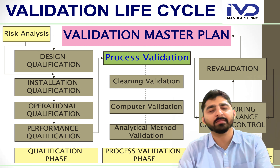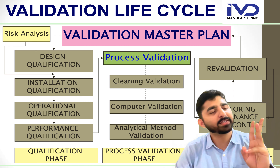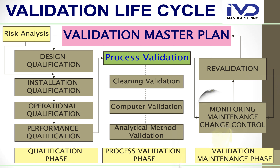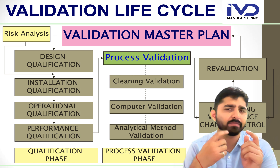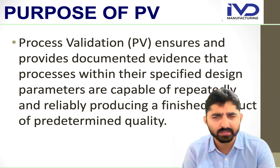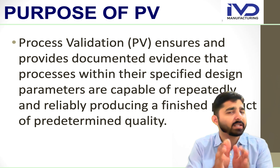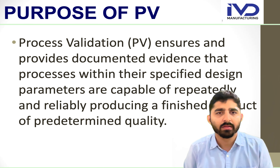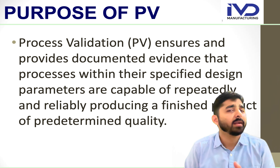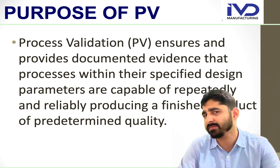We have three process validation batches. Whenever I create these three PV batches, I need to maintain documentation of the processes — a BMR, log sheets, log books — and capture every detail, including manpower requirements, operator details, equipment ID, and everything else. Once I produce all three batches, I perform QC on all three batches individually. At the end, I demonstrate that whatever process validation I carried out and whatever documents I maintained give reliable results across all three batches. That is the purpose of PV.